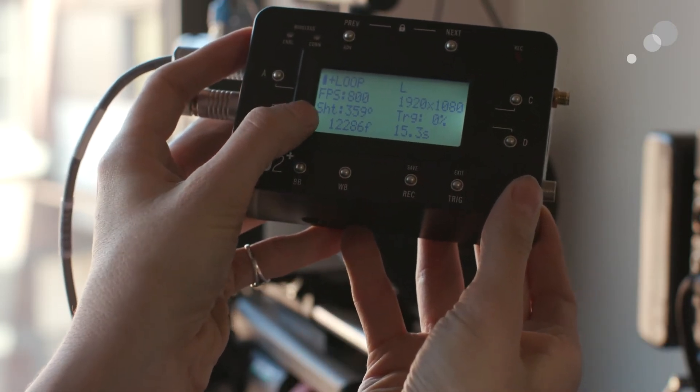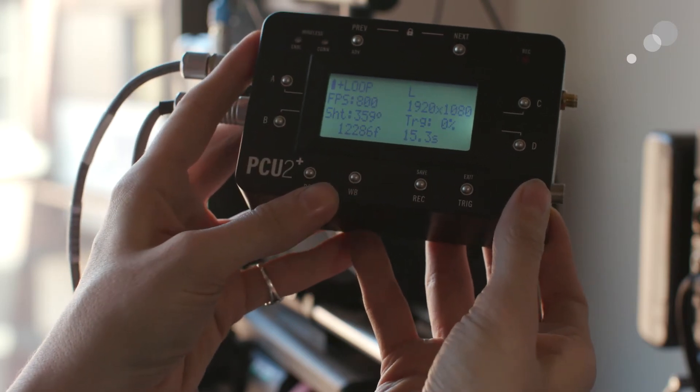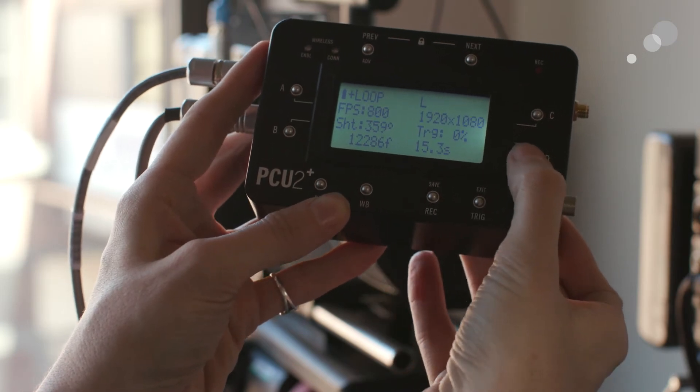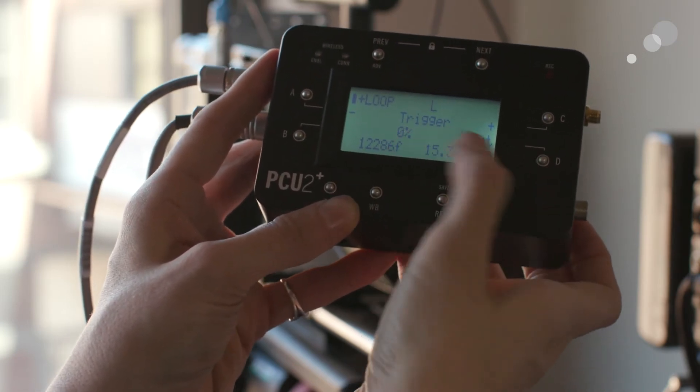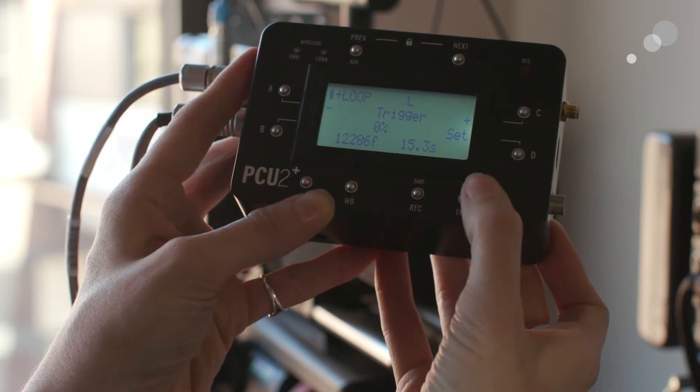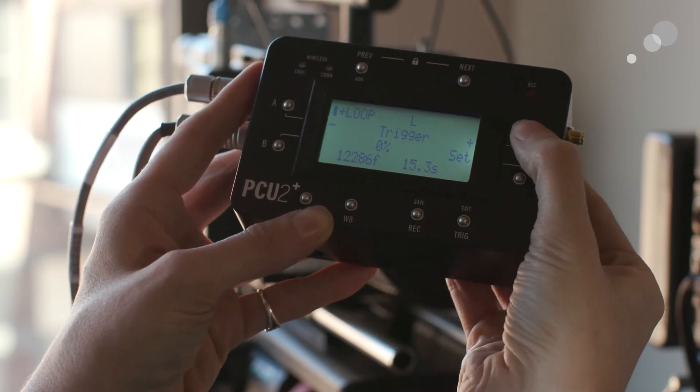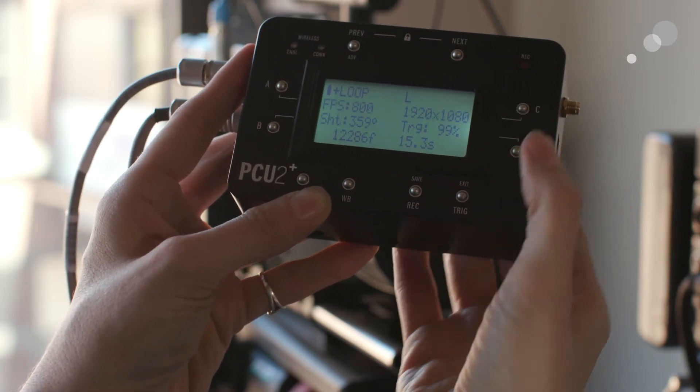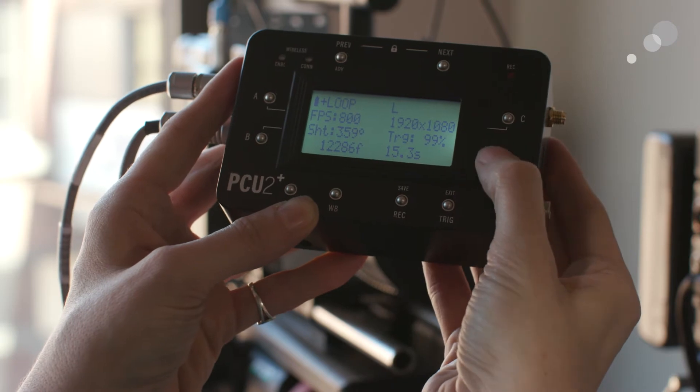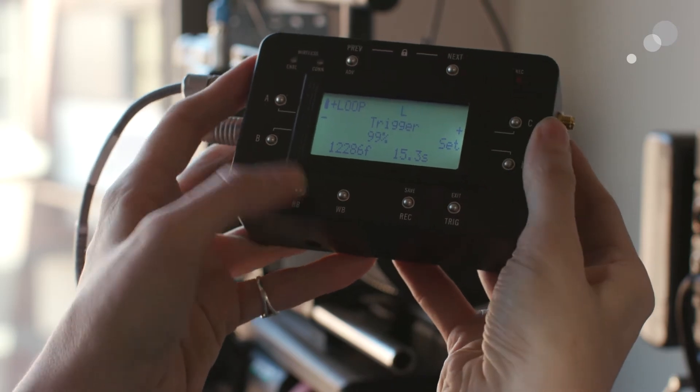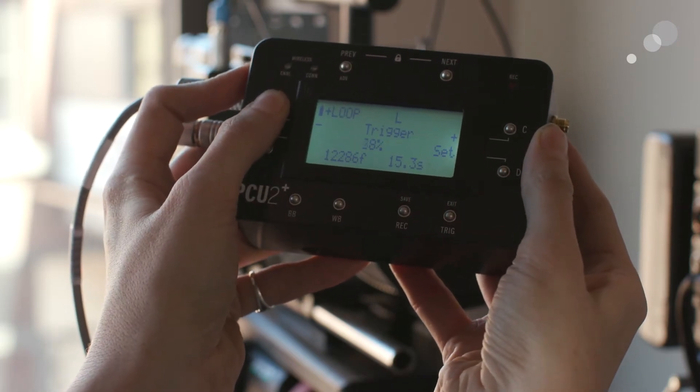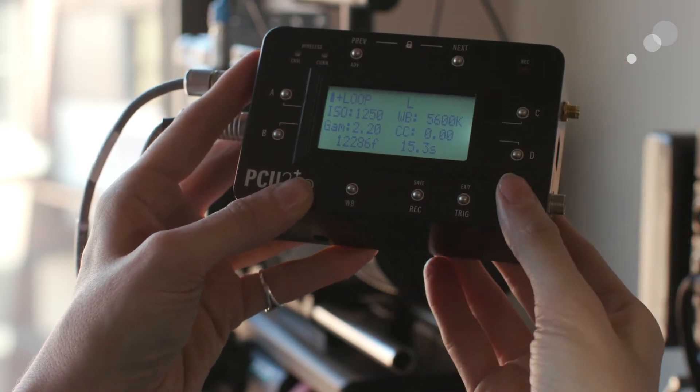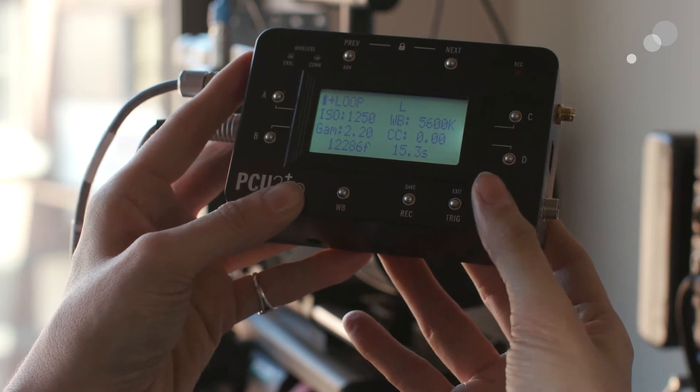I've got my shutter, which right now is all the way open because I need to capture the most light for this setup. I also can change my trigger point, so if I hit here for trigger, right now 0% means it's triggering at the end of the clip. So if I wanted to change that, I could go ahead and say, let's put it at the beginning, and now I would trigger on action. However, most of the time with high speed, it's actually quite easier to trigger at the end, so I'm going to keep that back at 0%.